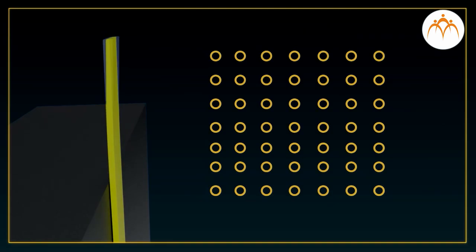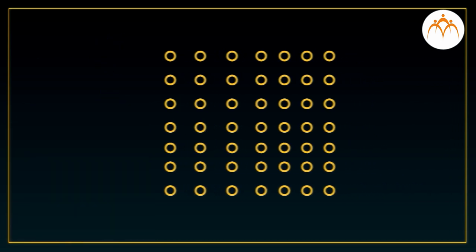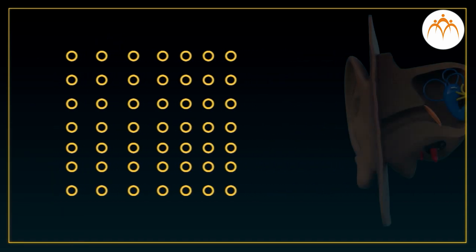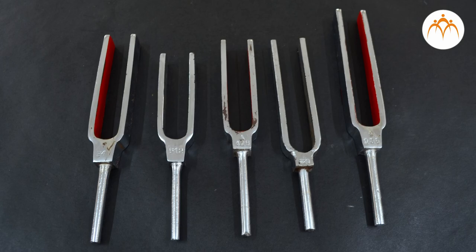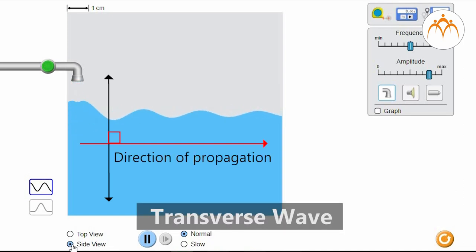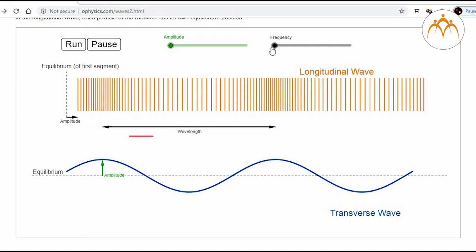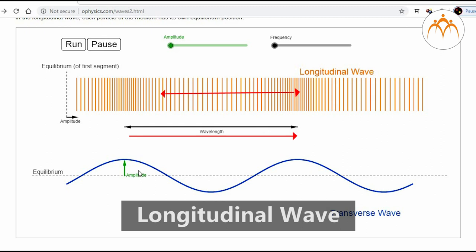Summary. Vibrations create disturbance in the medium. This disturbance or movement reaches our ears and we hear it as sound. Each tuning fork generates a unique sound. When particles in the medium move perpendicular to the direction of the wave, it is called a transverse wave. When particles in the medium move parallel to the direction of the wave, it is called longitudinal wave.